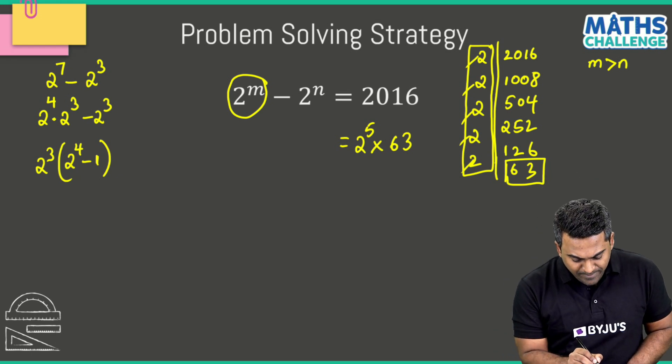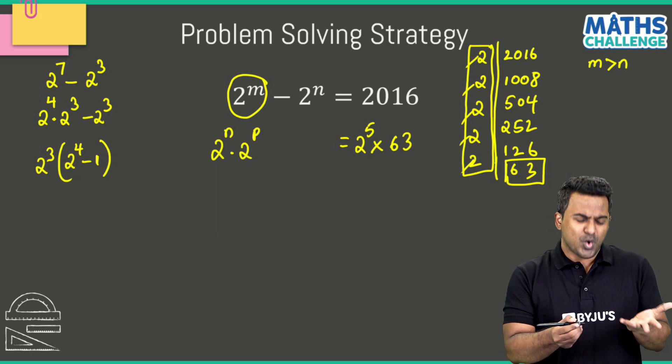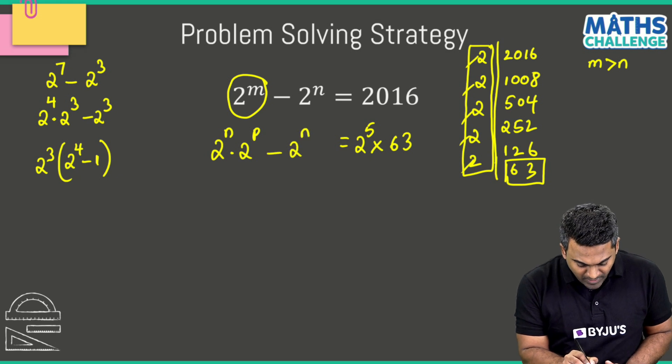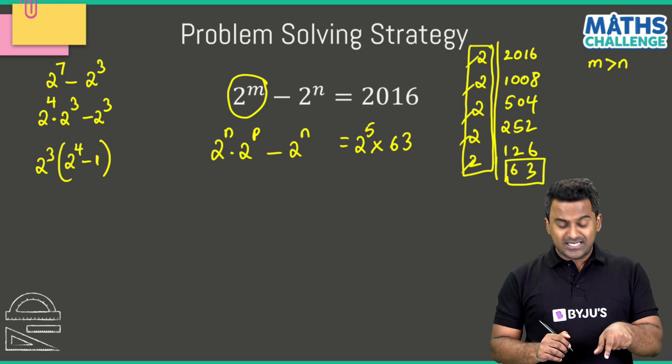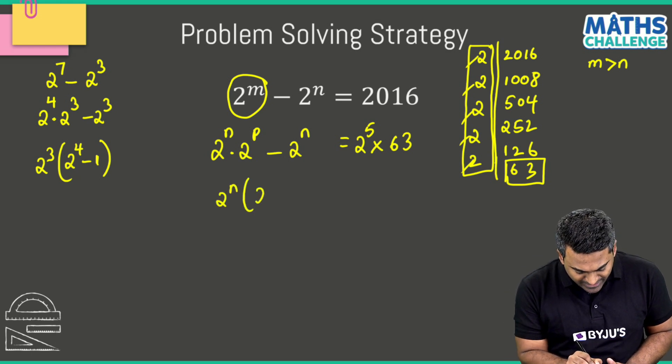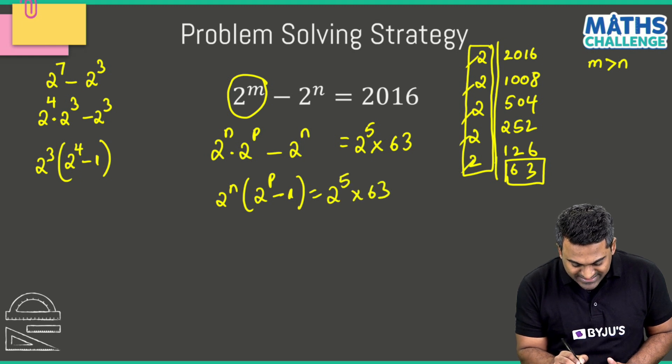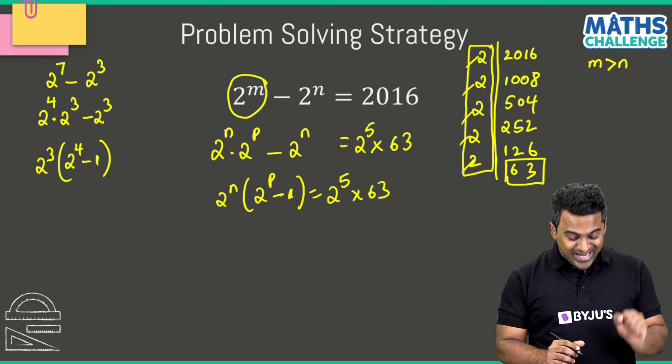I'm going to repeat the same thing here. 2^m I'll be able to write as 2^n multiplied with 2^p. I don't know p yet, that's fine. Minus 2^n. Both these terms have 2^n common, I'll take that out. Then this becomes 2^n multiplied with (2^p - 1) equals 2^5 multiplied with 63. There you go.